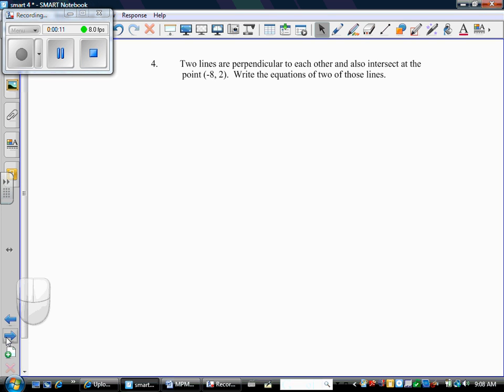Question 4 says two lines are perpendicular to each other and they also intersect at the point (-8, 2). Write the equations of those two lines. At first glance, it looks like there's not enough information in this question. All I know is that the lines are perpendicular and they go through the point (-8, 2).